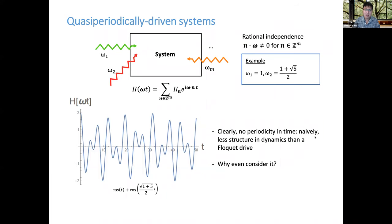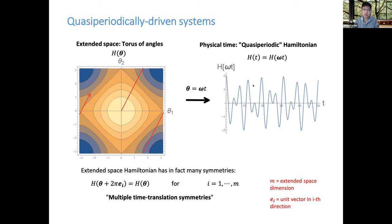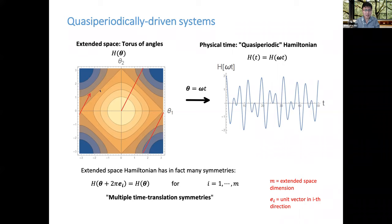Here's an example of a quasi-periodic drive — a one-dimensional Hamiltonian that has some pattern but clearly doesn't repeat in time; there's no period at all. Naively, one would say there's less structure than a Floquet drive. But the way to understand quasi-periodically driven systems is in an extended higher-dimensional space: instead of a Hamiltonian that is only a function of a single time, one should think of it as a Hamiltonian living on a torus of angles. We are simply evaluating it along some trajectory around the torus at the rate given by omega·t, which gives rise to the physical-time Hamiltonian.